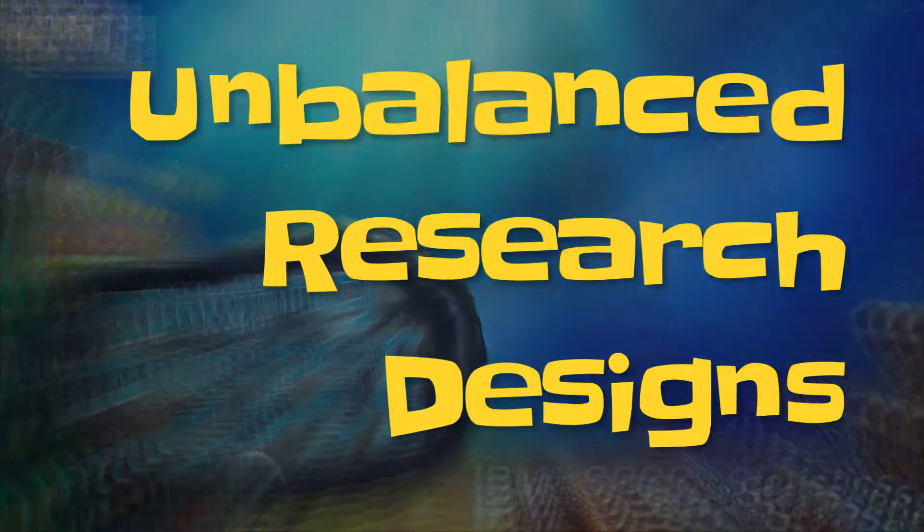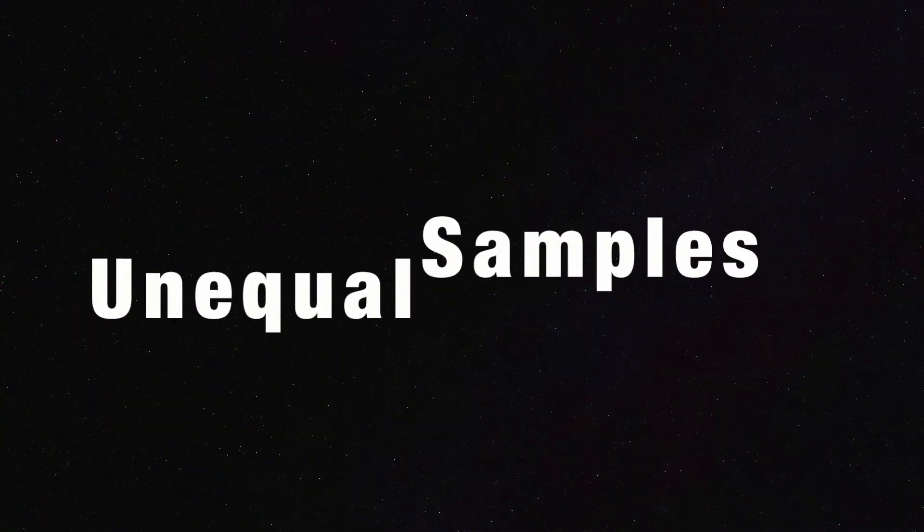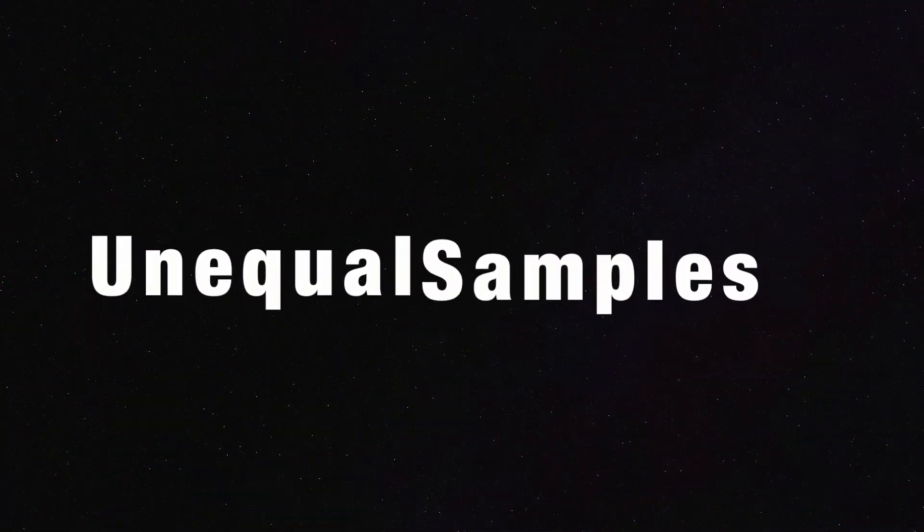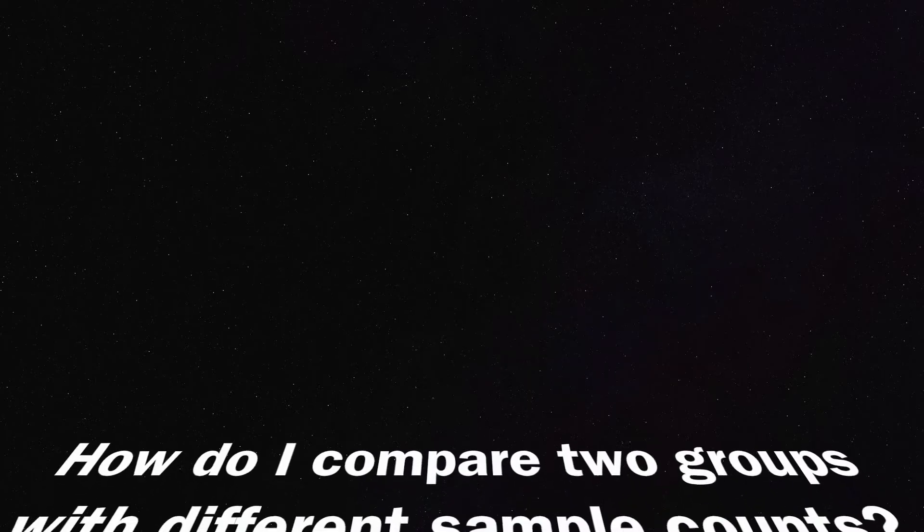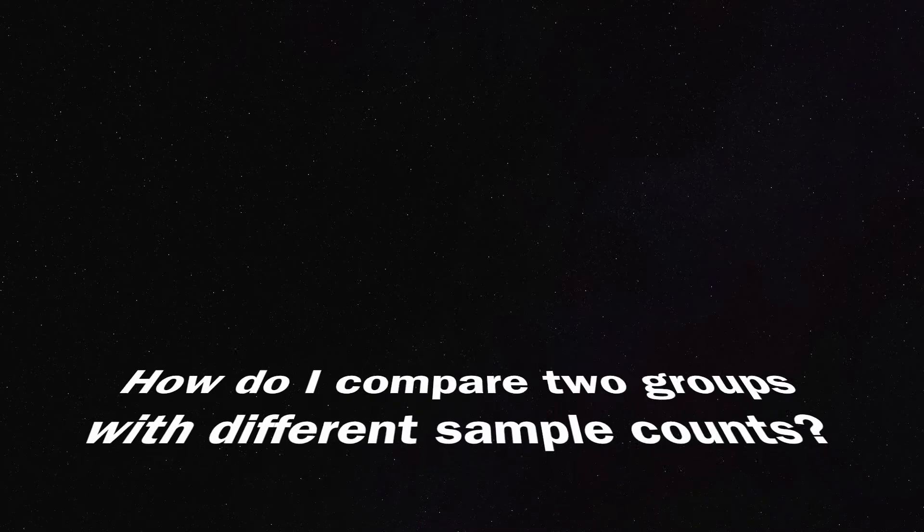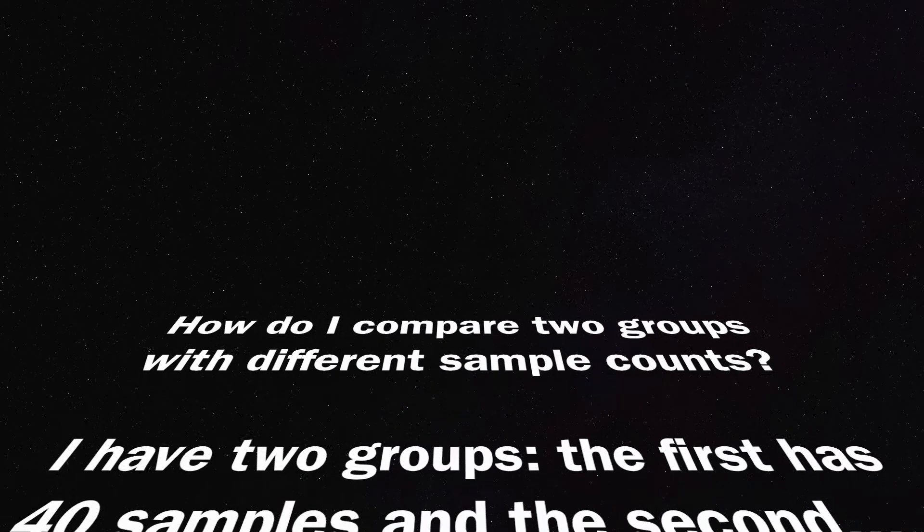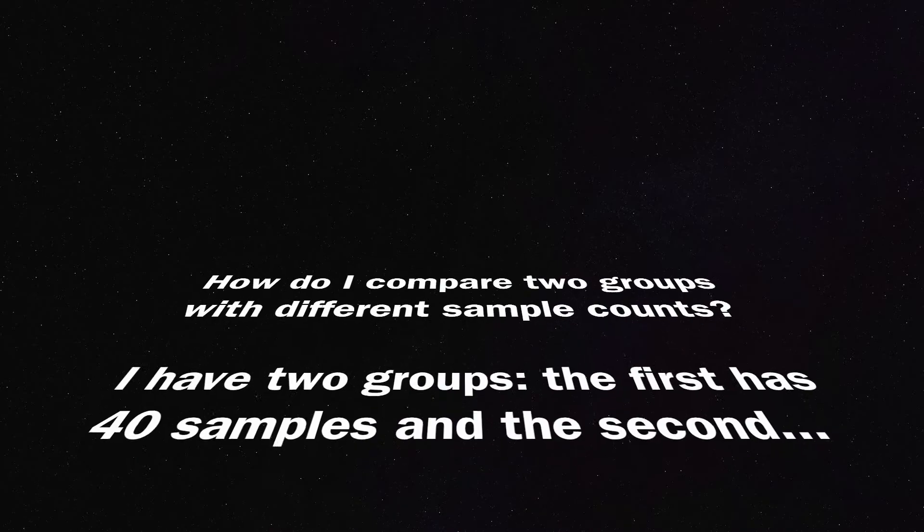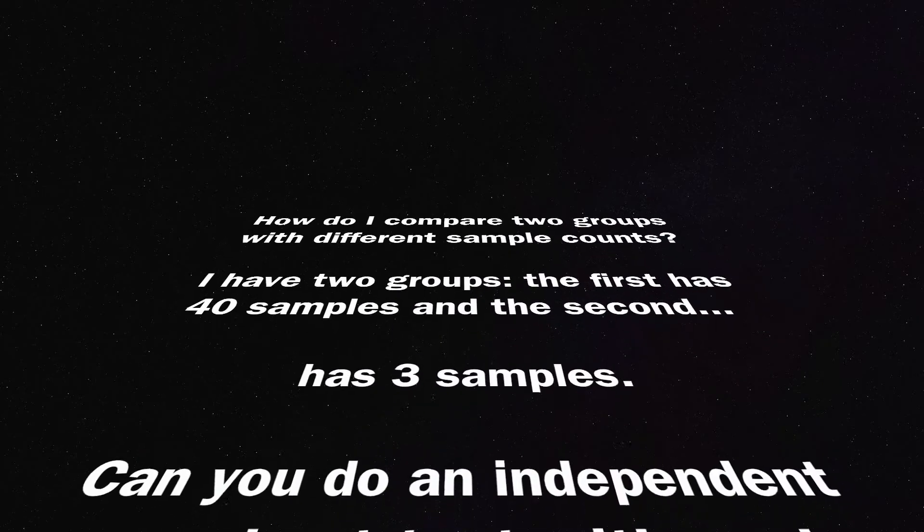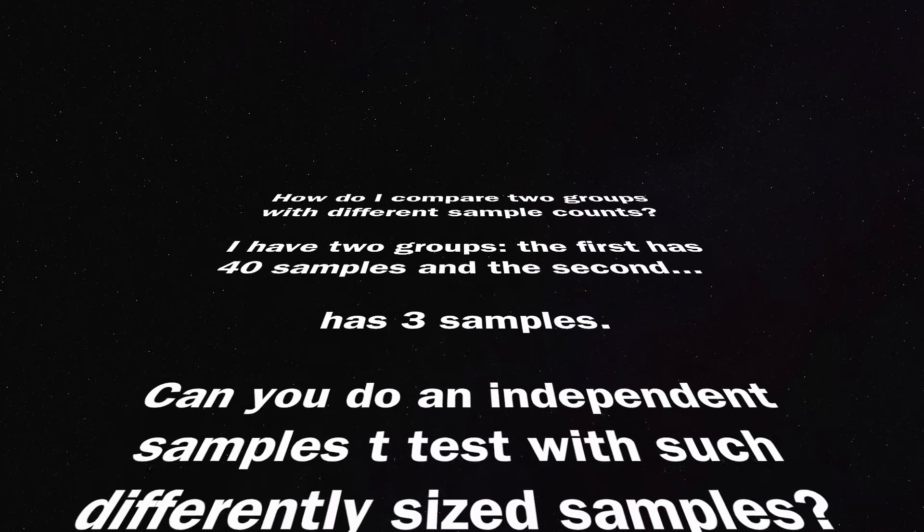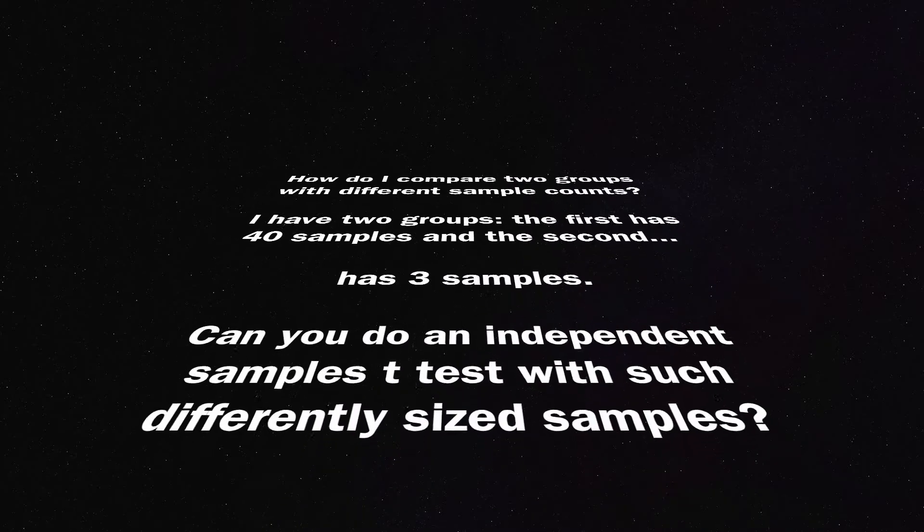I received this question from a researcher who wanted to do some group comparisons, but the groups were of different sizes. She asked, how do I compare two groups with different sample counts? I have two groups. The first has 40 samples, and the second has three samples. Can you do an independent samples t-test with such differently sized samples?